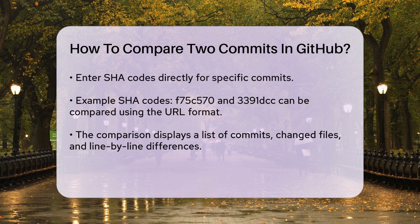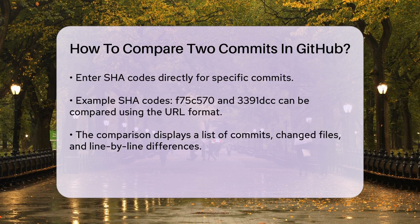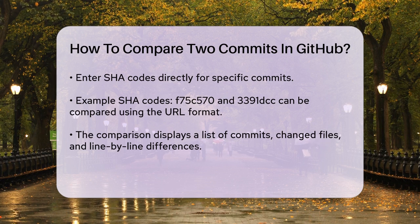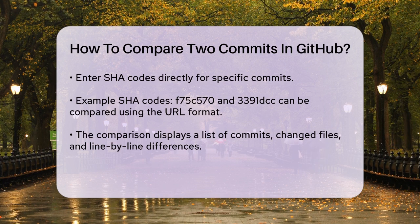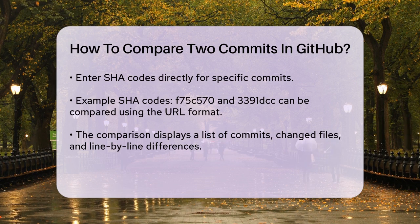The comparison includes a list of commits, files changed, and line-by-line code differences. GitHub also uses color coding to make it easier to review the changes. Green lines indicate added code, red lines indicate removed code, and gray lines show unchanged or context lines. This visual representation helps you quickly understand what has been modified.